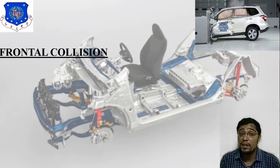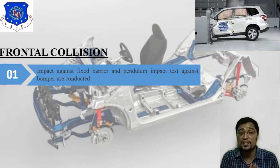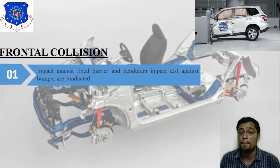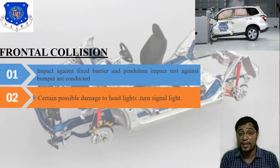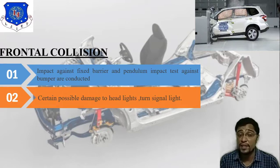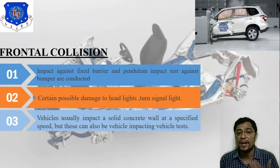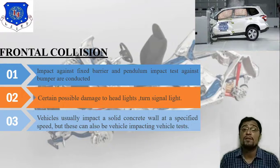In frontal collision, impact against a fixed barrier and pendulum impact test against the bumper are conducted. Second, certain possible damage to headlights and turn signal lights occurs. Third, the vehicle usually impacts a solid concrete wall at a specified speed, but this can also be a vehicle-impacting-vehicle test.